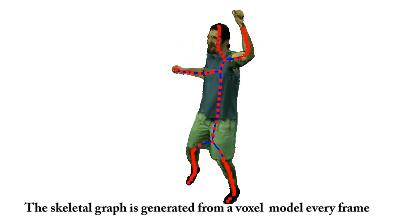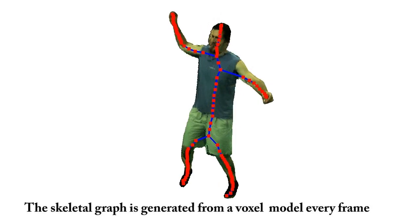Silhouette data is used to generate a 3D model and we extract the skeletal graph through voxel scooping in every frame.